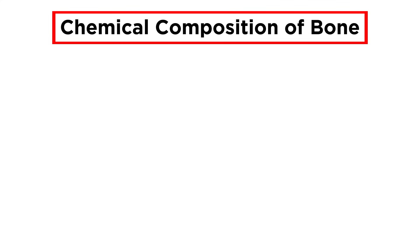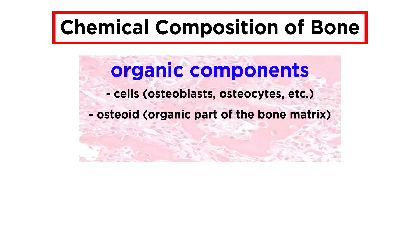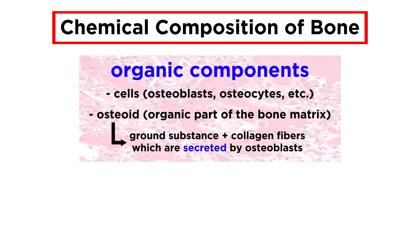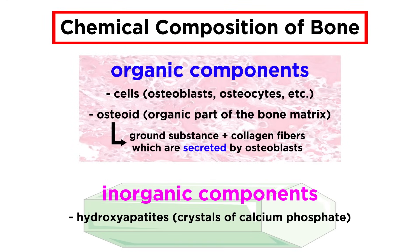Lastly, we can discuss the chemical composition of bone. There are organic components, which are all the cells we discussed, as well as osteoid, which is the organic part of the matrix. This is made of ground substance and collagen fibers, which are secreted by osteoblasts. These materials contribute to the structure, flexibility, and tensile strength of the bone. There are also inorganic components inside any bone, such as hydroxyapatites. These are needle-like crystals of calcium phosphate surrounding the collagen fibers, which largely accounts for the hardness of bone.